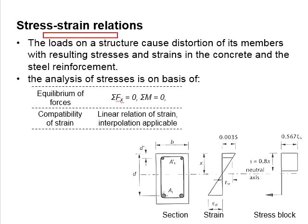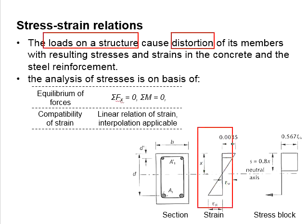The load acting on the structure causes distortions of each member. These distortions can be represented by the strain diagram given here.